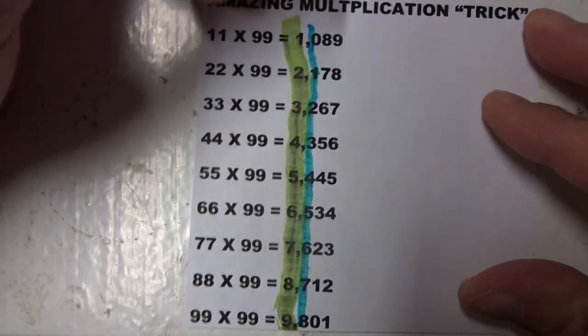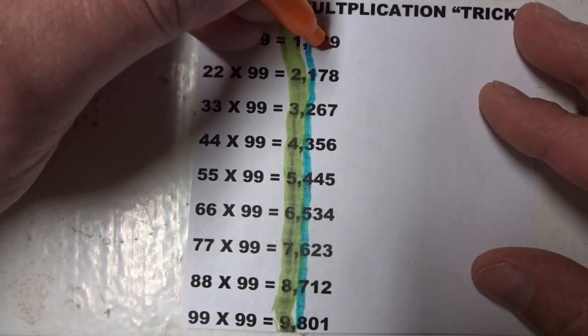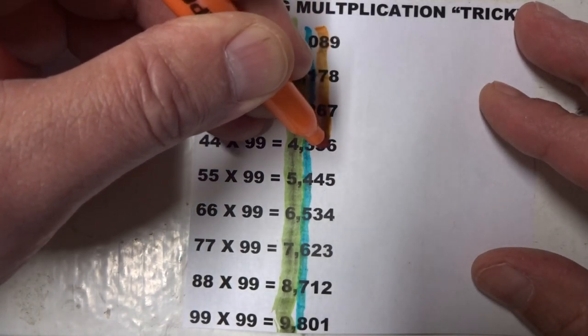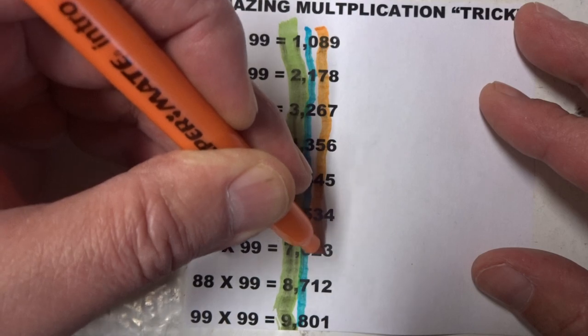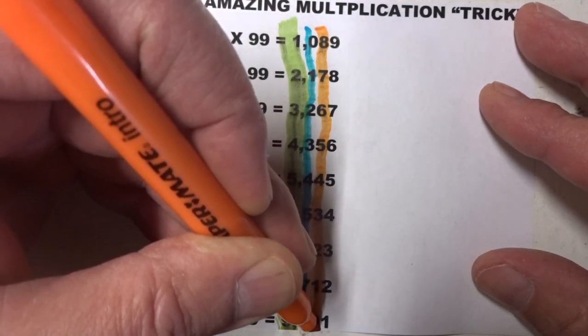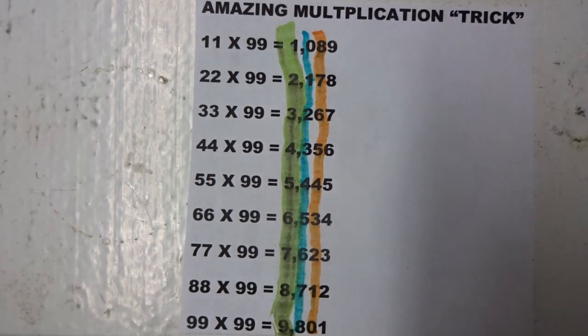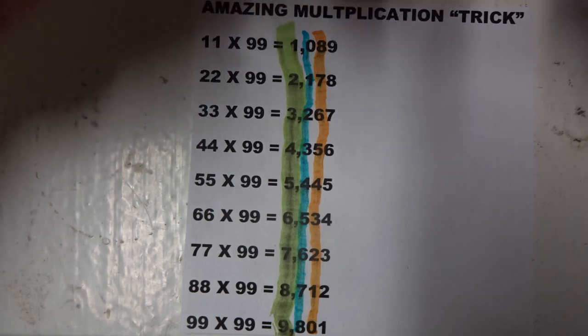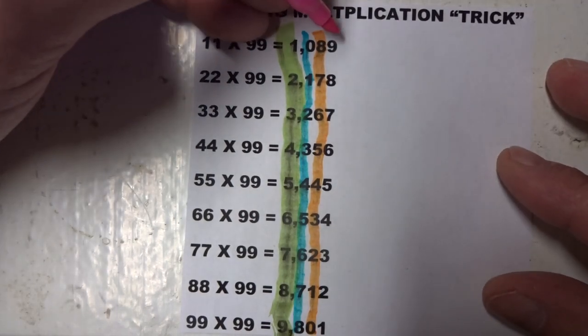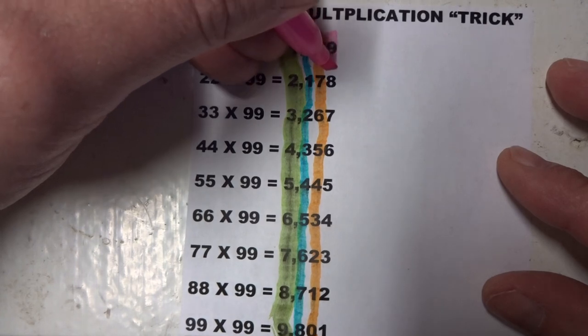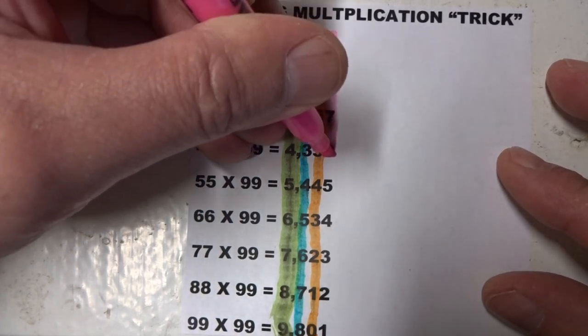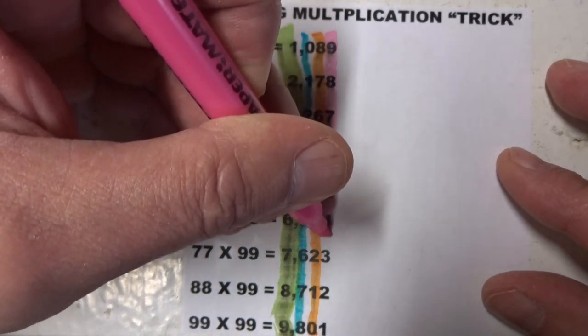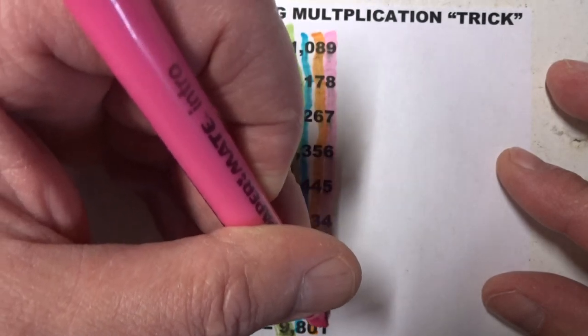In the third column, we go 8, 7, 6, 5, 4, 3, 2, 1, 0. And in the last column, we go from 9, 8, 7, 6, 5, 4, 3, 2, 1.